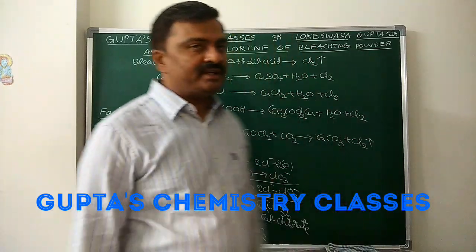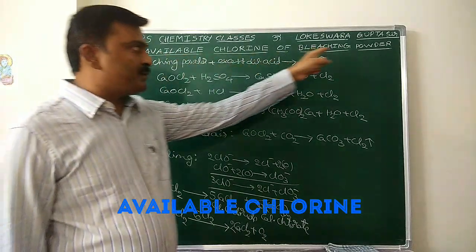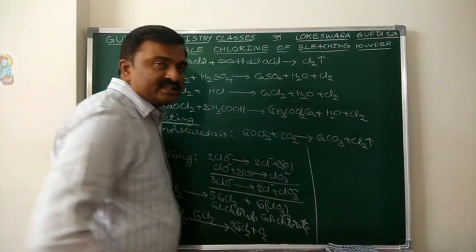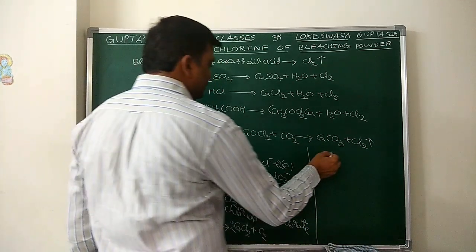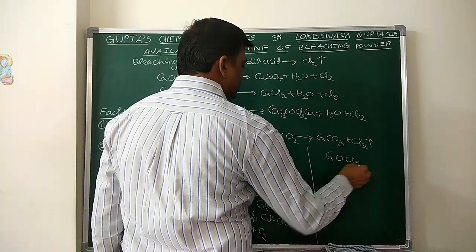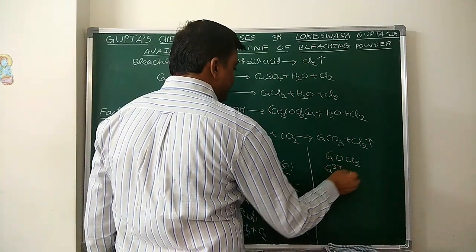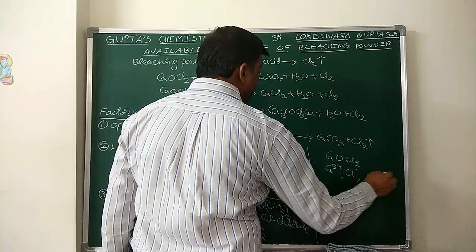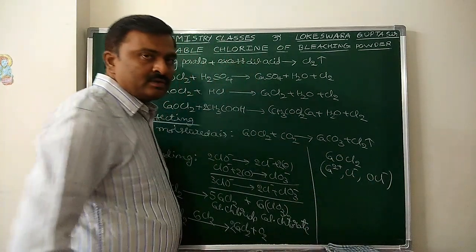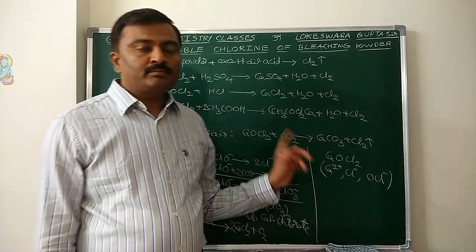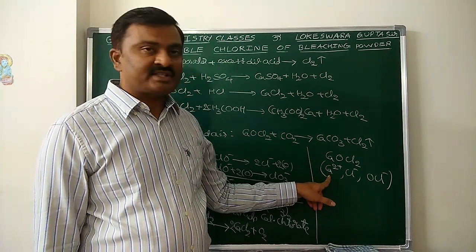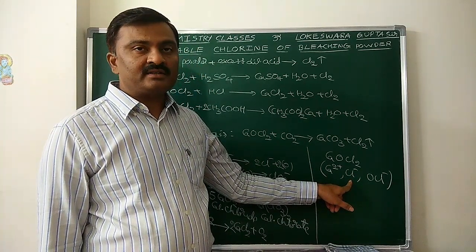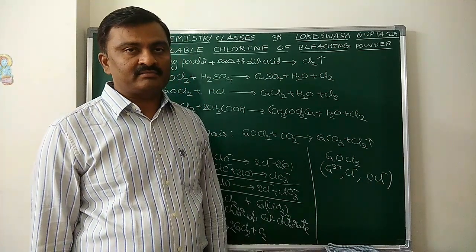Today our topic is Available Chlorine of the Bleaching Powder. Before going to that, the formula of bleaching powder is CaOCl2. In this, calcium 2+ ions, chloride ions, and hypochlorite ions are present. We can consider it as a mixed salt of calcium hydroxide base and two acids: hydrochloric acid and hypochlorous acid.